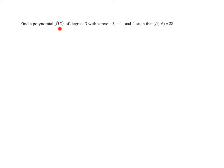In this problem, I need to find a polynomial f(x). We know it is degree 3. We're given three zeros of the polynomial and we're given a point on the polynomial. We know when x is negative 6, the function value is 28.